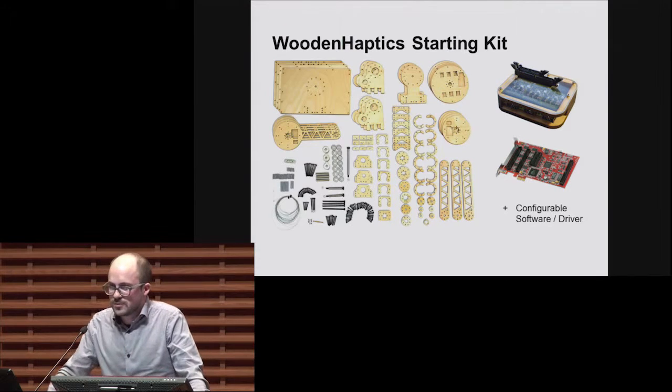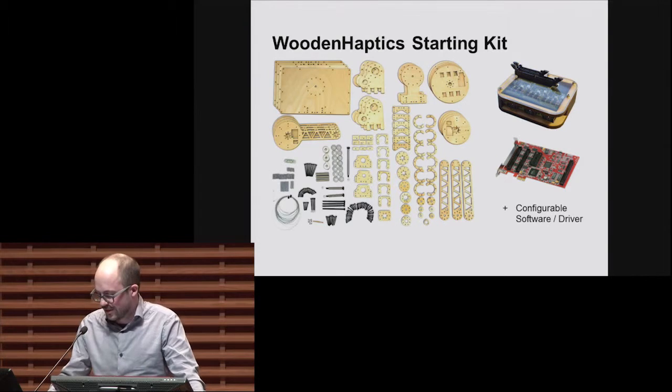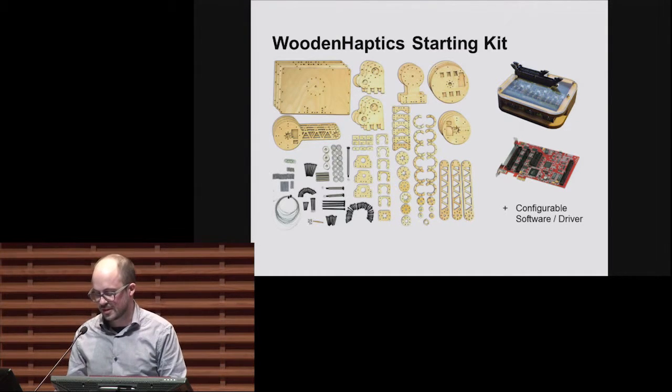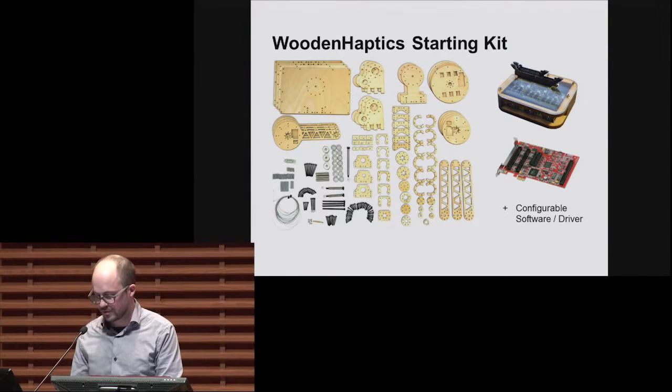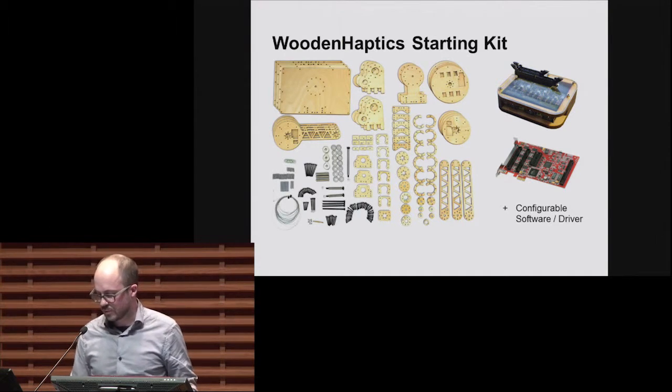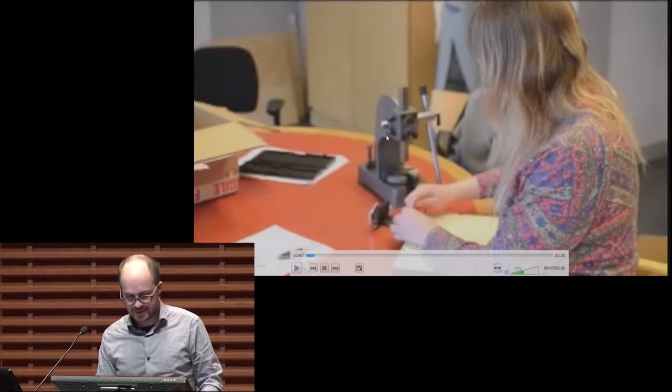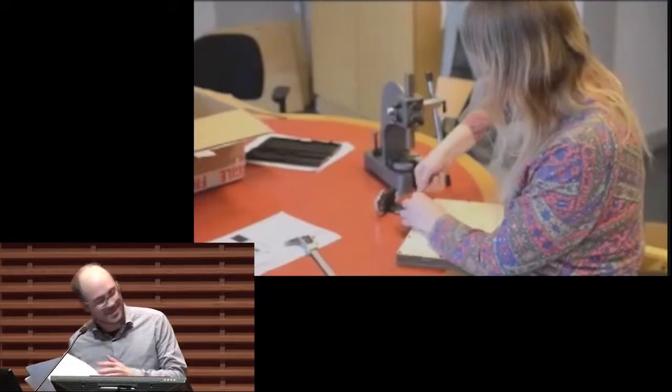So to open up the design space without having access to a fabulous electromechanical lab, we propose this starting kit called wooden haptics. And this allows an interaction designer to manufacture and assemble a fully working spatial haptic device. The drawings and schematics of this kit is available as open source and can be produced using personal fabrication methods. With these parts, a default design can be assembled. All right.